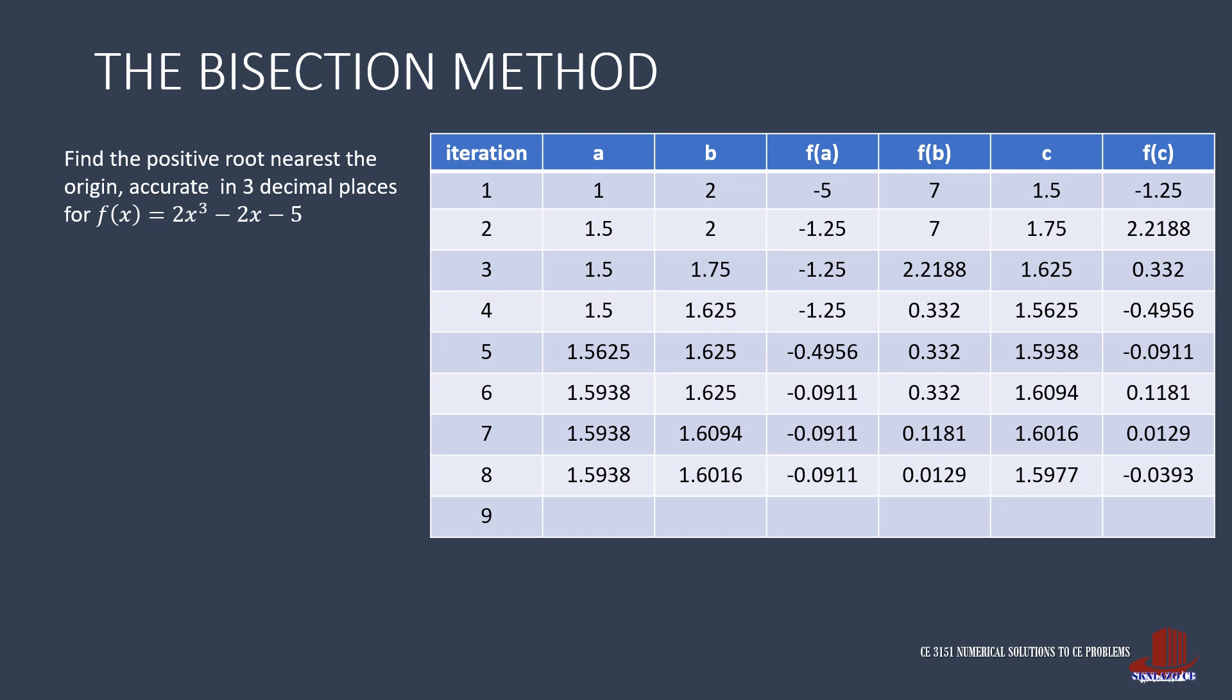The next iteration is then computed with A as 1.5977. F of A is negative 0.0393. B and F of B remain as 1.6016 and 0.0129. C is then computed as 1.5996. And using these into the equation, we get F of C as negative 0.0132. With negative F of C, replace A again with C.